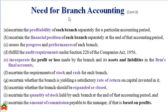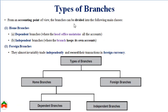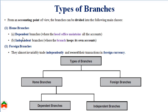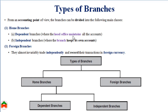We can ascertain the amount of commission that should be paid to the manager who manages the branch — that commission can be calculated whenever we calculate the profit, and for calculating the profit we need to apply branch accounting for each branch. Broadly, we can classify branches into two categories: home branches and foreign branches. There are two types of home branches — dependent branches and independent branches.